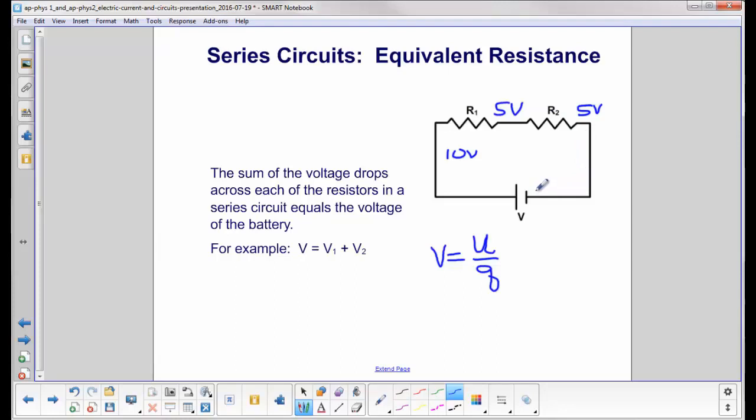have no more energy. They're just getting pushed by the charges behind them. So what we have due to conservation of energy is the total voltage that was delivered by the battery, the amount of energy—some of it got used up here. Used up is a bad word. Some of it got transferred to other forms of energy, and some got transferred to other forms of energy here.